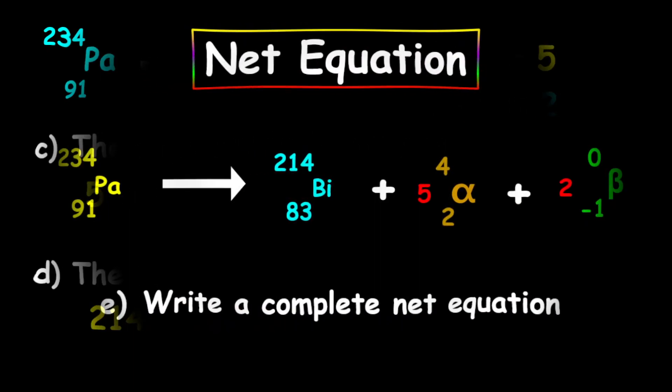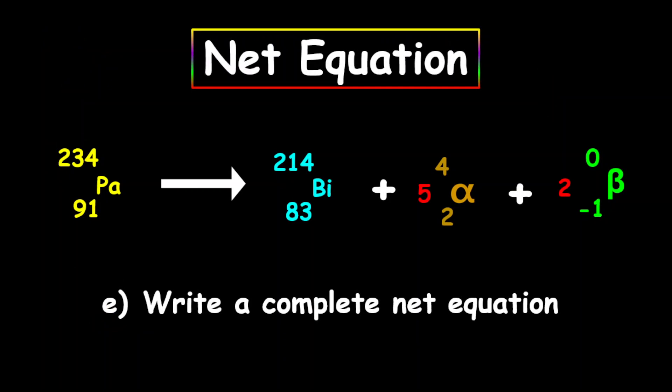For the final portion of this question, we want to write a complete net equation. We're starting from protactinium 234 into bismuth 214. We have five alpha particles, and we have two beta particles.